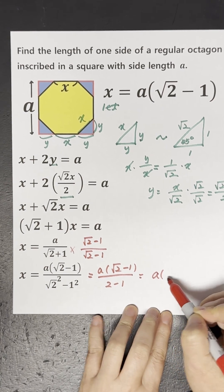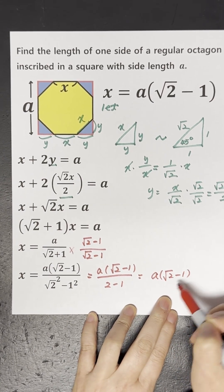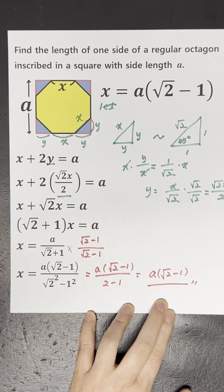The final answer is A square root 2 minus 1. You can remember this and use it from now on.